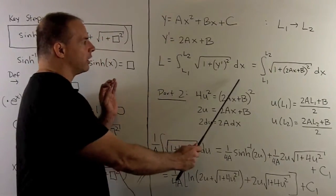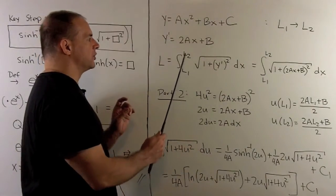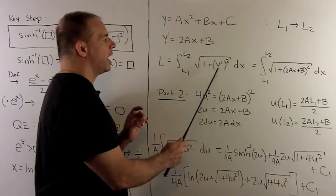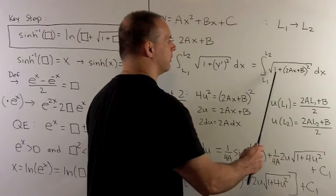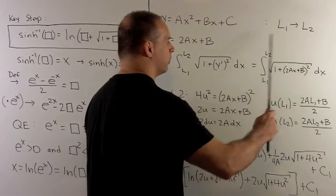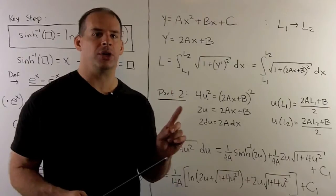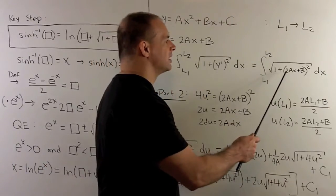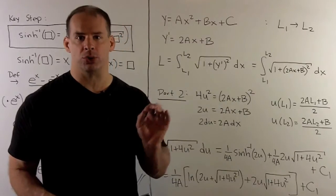We have our formula for arc length. So we're taking definite integral from l1, l2, in x. Square root of 1 plus y prime squared. So we substitute in for y prime, and then we're working with this. Now, to get to our antiderivative from parts 1 and 2, our trick is to let 2ax plus b squared be equal to 4u squared.